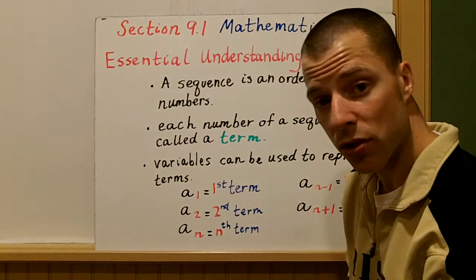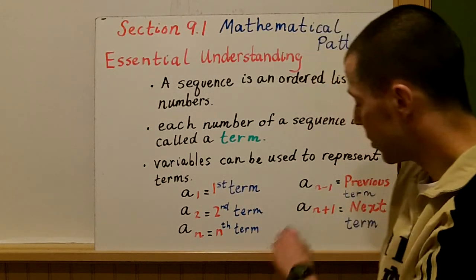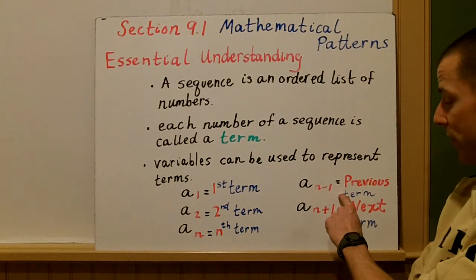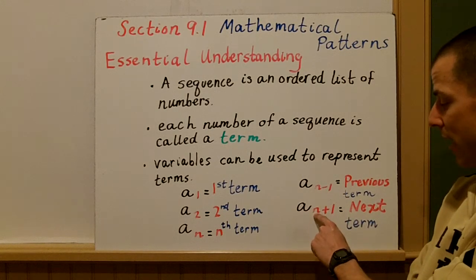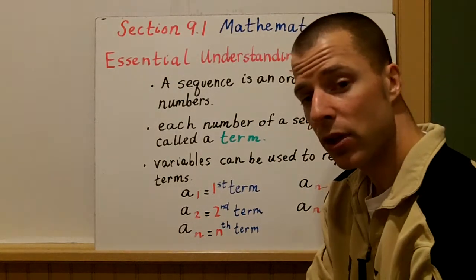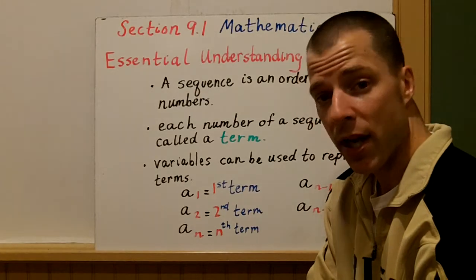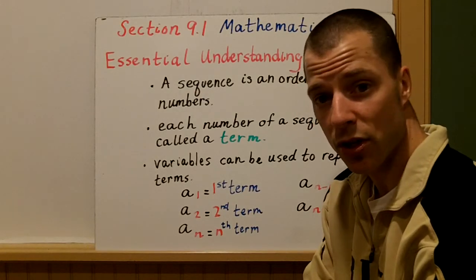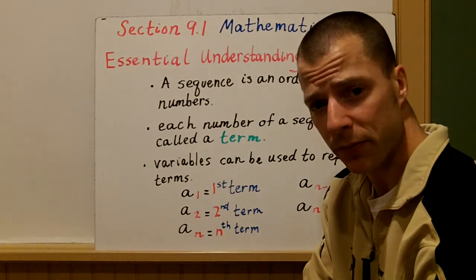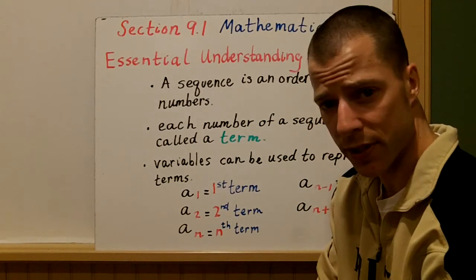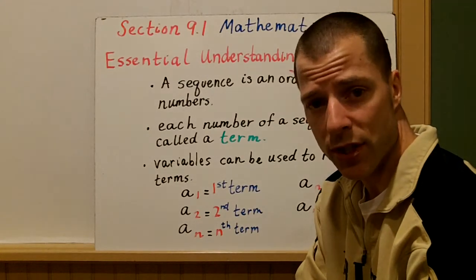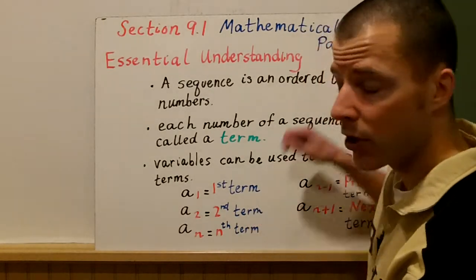We can also look at different notations, such as a sub n minus 1, that's the previous term, and a sub n plus 1, that's the next term. We're going to look at four different examples, find some missing terms, and write equations or rules for each. We'll explore two different types of equations: explicit versus recursive.